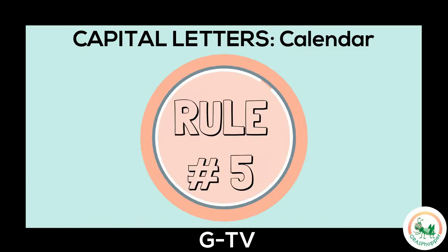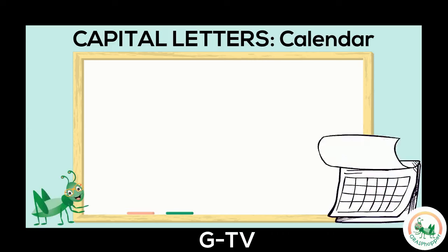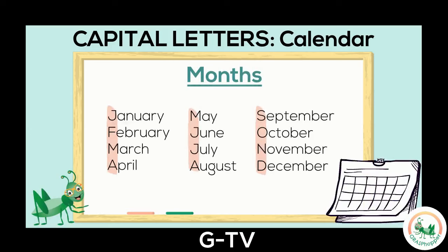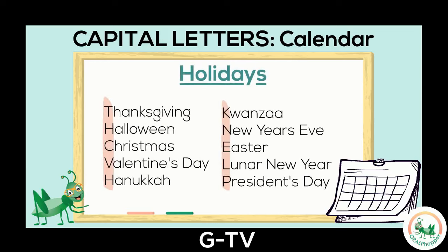Rule number five: write a capital for calendar words. We write a capital letter at the start of months, such as January, April, and July. We also write a capital letter for the days of the week, like Monday and Friday. Capital letters are also used for holidays like Halloween, New Year's Eve, and Easter.